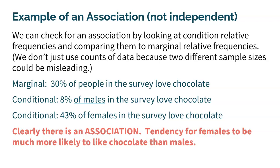Likewise, 43% of the females in the survey love chocolate. So we see a lower percentage amongst males that like chocolate and a higher percentage amongst females. Clearly there is an association — there is a tendency for females to be much more likely to like chocolate than males. The 30% is our baseline for all people, and we see it go down for males and up for females. So the variable of gender has an association with liking chocolate, meaning they are definitely not independent.